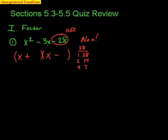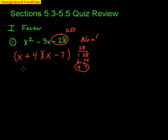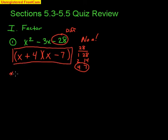We have negative 3 in the middle, and our signs are different, which means we subtract to get 3. Looking at the factors, 4 and 7 subtract to get 3. Since the 3 is negative, the bigger number must be negative — so 7 is negative and 4 is positive. Those are your two factors.